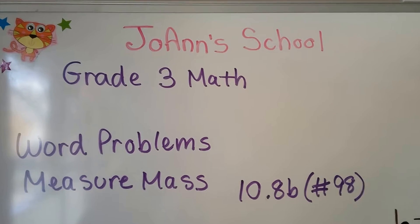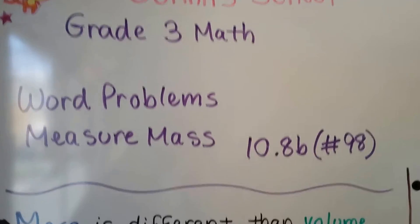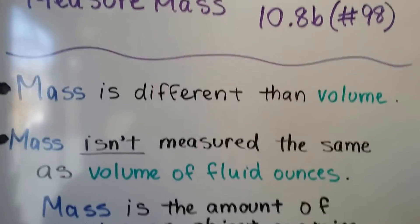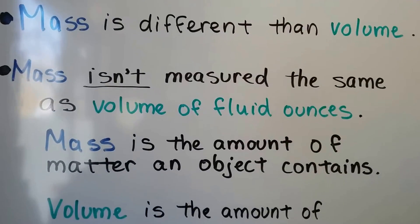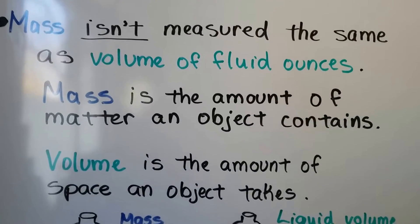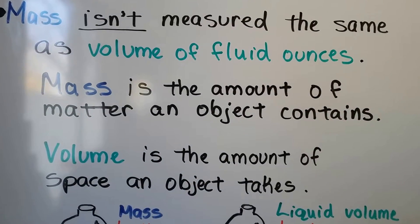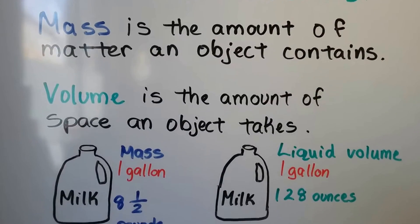Grade 3 math, word problems, measure mass. Mass is different than volume. It isn't measured the same as volume or fluid ounces. Mass is the amount of matter an object contains.